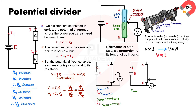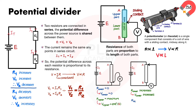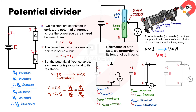If the sliding contact is moved upwards, the resistance of the lower part will increase, and so the potential difference across it will also increase. Meanwhile, the resistance of the upper part will decrease, and so the potential difference across it will also decrease.